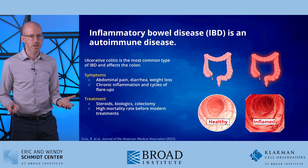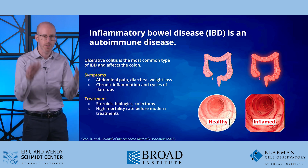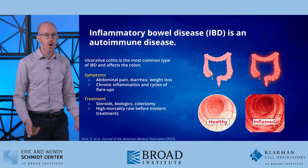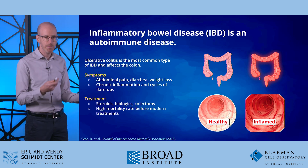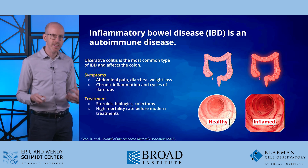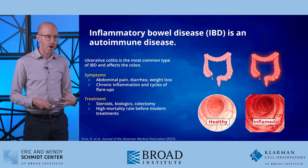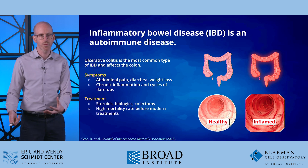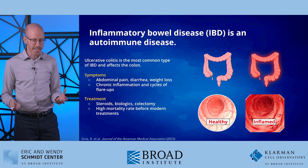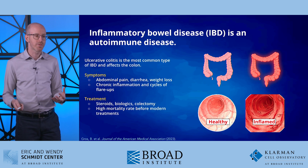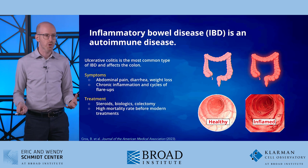How is ulcerative colitis currently treated? Certain treatments are steroids, which generally suppress your immune system. There are also biologics, which are molecules that can target specific parts of the inflammatory pathways. And finally, in really bad situations, there's the colectomy, where either part or the entire colon is removed from the ulcerative colitis patient. Before we had these treatments, the mortality rate for ulcerative colitis was very high — up to 60%. So this is a really terrible chronic disease.